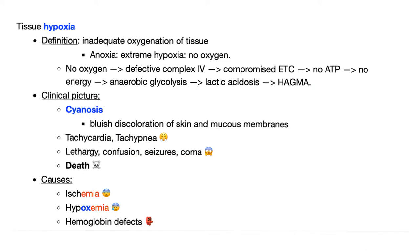The first thing you need to know about any disease is the definition. What's the definition of hypoxia? It's decreased oxygen supply to tissue or inadequate oxygenation. This is different from anoxia. Oxia means oxygen, hypo means low, an means no in Greek, and oxy means oxygen. So anoxia is extreme hypoxia when you have no oxygen.